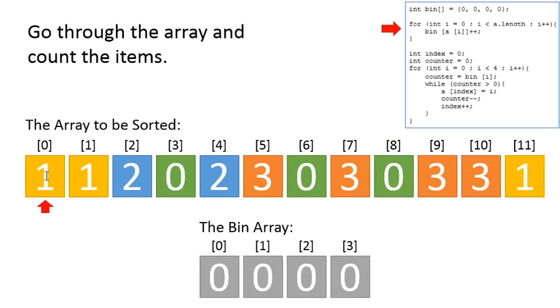First of all, we have a one, so that means we're going to go to the first element right here, number one, and we're going to add one to it. So now we've got another one, so we're going to add another one down here. Now we've got a two, so we're going to go over to the second one right here and add one. Then we've got a zero, so we'll go down here and add one.